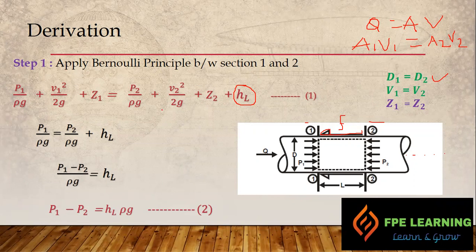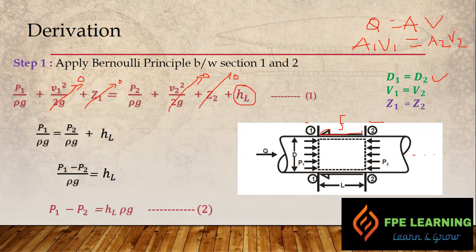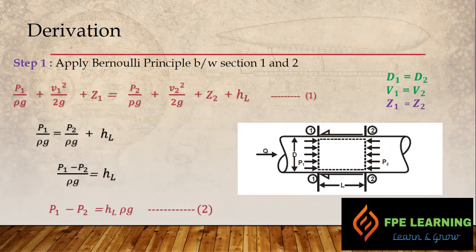Since V1 equals V2, the velocity terms cancel out. Since Z1 equals Z2 (same elevation), those terms also cancel. What remains is: P1/ρg = P2/ρg + HL. Rearranging, we get: P1/ρg − P2/ρg = HL. Multiplying both sides by ρg gives the final simplified result: P1 − P2 = HL · ρ · g. This is Equation 2.